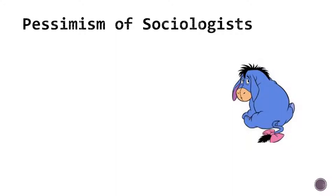This last chapter of the book is an overview of pessimism and optimism in the discipline and history of sociology. Unlike other chapters, this guide has six slides instead of four.